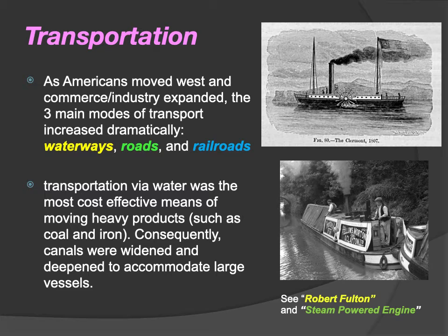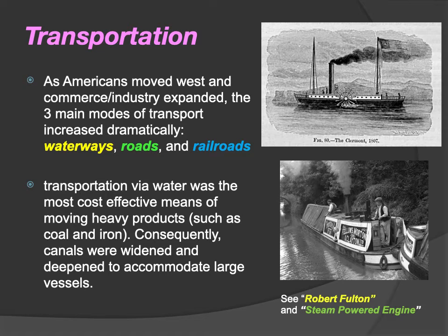We also have transportation. As Americans moved west, commerce and industry expanded. The three main modes of transportation increased dramatically: waterways, roads, and railroads. In the beginning of the 1800s it was mainly waterways. We also have the completion of the National Road, which connected north and south and improved roads throughout the region. Then railroads took off throughout the 1800s and became the main mode of transportation for shipping things across the country.